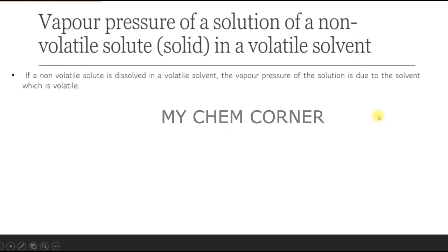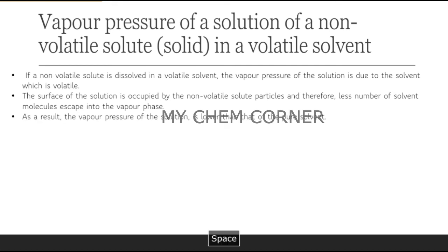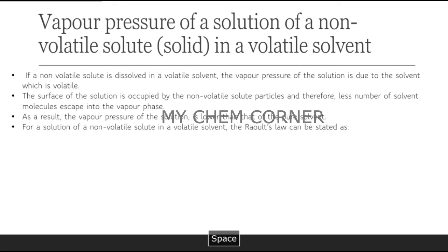The vapor pressure of the solution comes only from the volatile solvent. However, the surface of the solution is occupied by the non-volatile solute, which blocks the volatile solvent from escaping easily to the vapor phase. As a result, the vapor pressure of the solution is lower than that of the pure solvent.